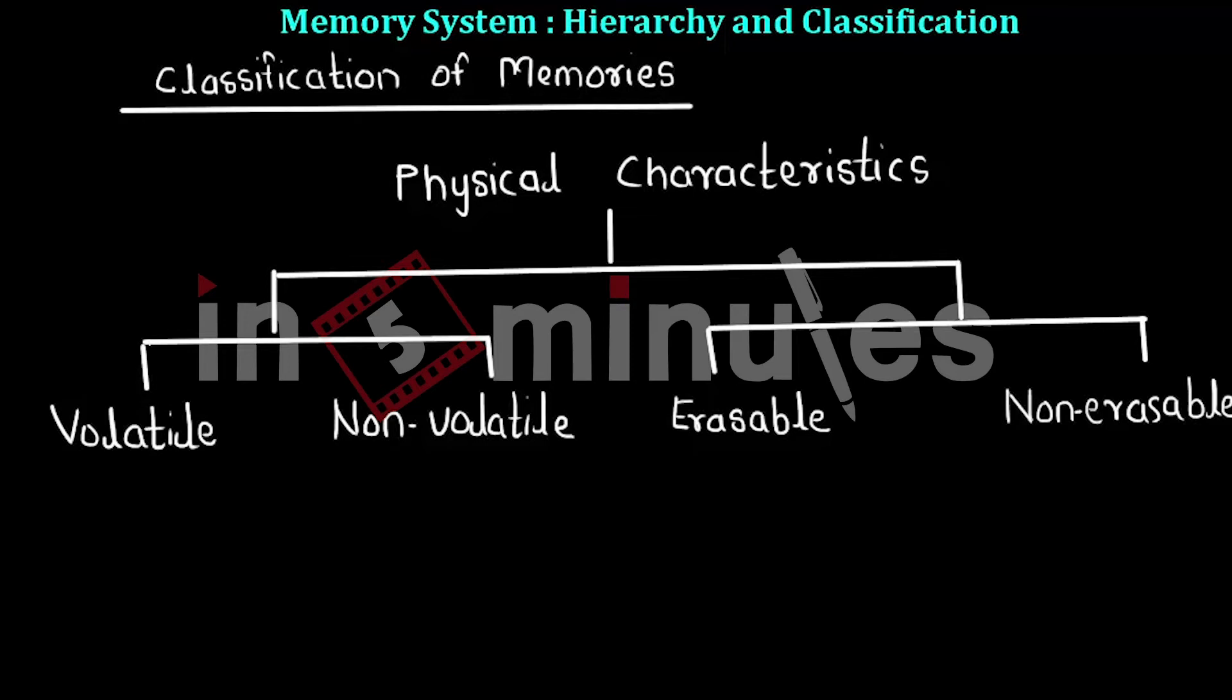For example, electrically erasable ROM arrays and RAM arrays are erasable. And non-erasable memories are those in which the data cannot be altered once it is written. Typical ROM arrays and CD-ROMs are examples of non-erasable memories.